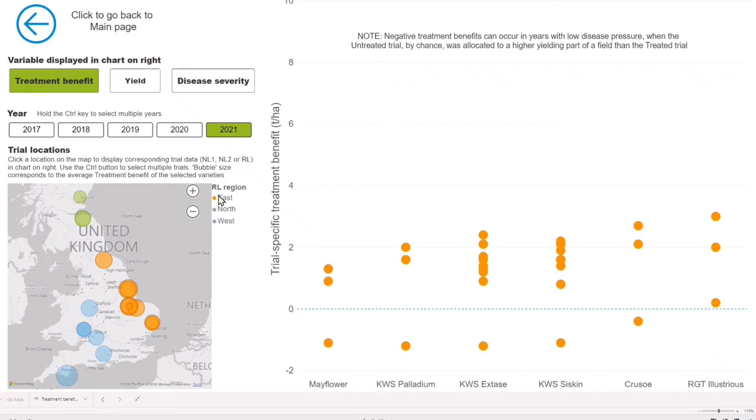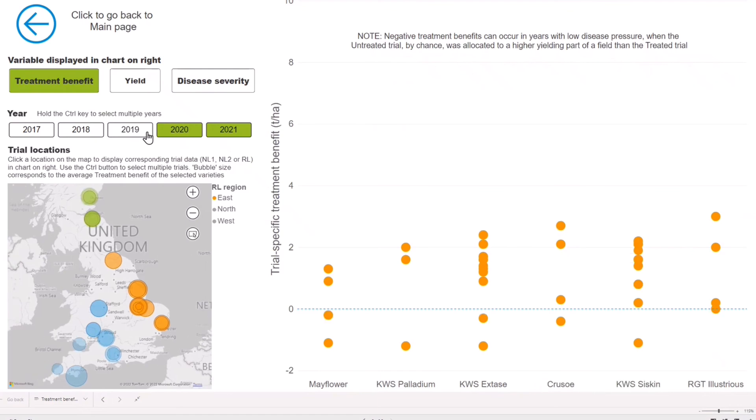Click on the colored region dot to isolate results from that region. To select multiple sites or regions and years, simply hold the control key when making selections.